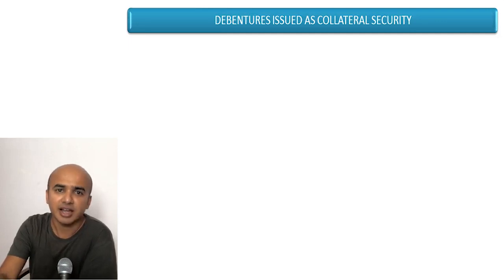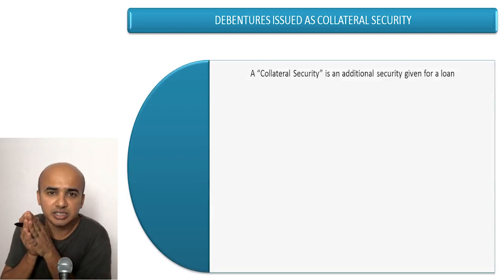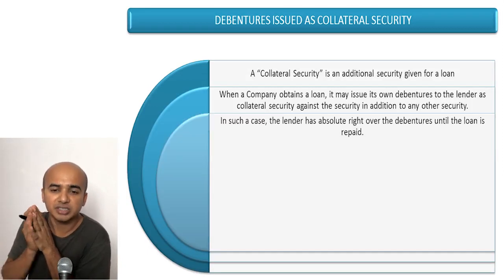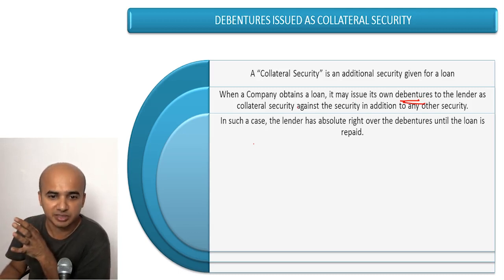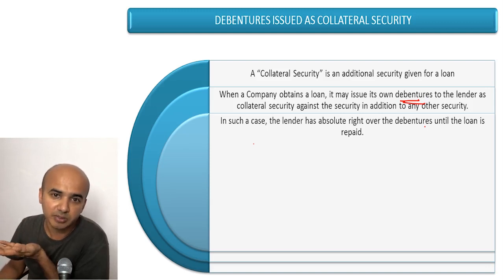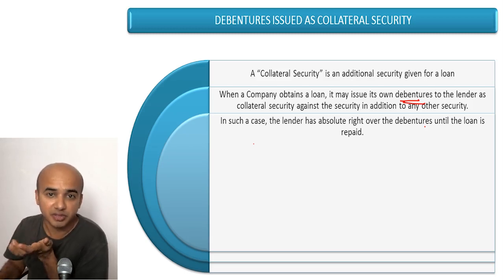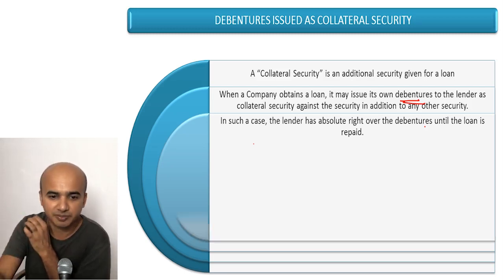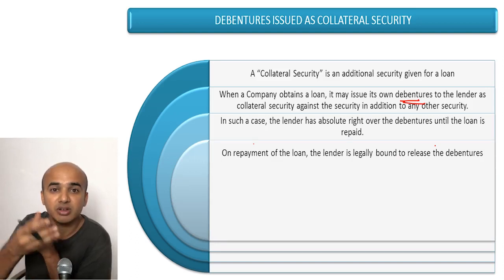Debentures issued as collateral security means additional security for loans obtained from financial institutions like banks. Collateral security, as the name says, is additional security given for a loan. When a company obtains a loan, it may issue its own debentures to the lenders as collateral security — in addition to any other security already provided. In such a case, the lender has absolute right over the debentures until the loan is repaid. For example, if Kingfisher Limited obtains a loan from SBI, Kingfisher would have given some security and on top of that issues debentures as collateral, so that in case of default SBI can encash those debentures.